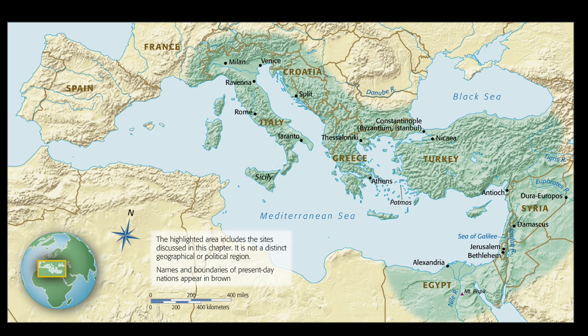The city of Ravenna, as you can see on the map here in Italy right above Rome, was the seat of the Roman Empire in the 5th century, and then of Byzantine Italy until the 8th century. It has a unique collection of early Christian mosaics and monuments.